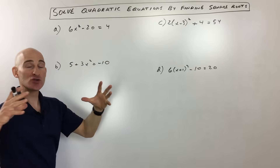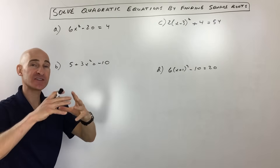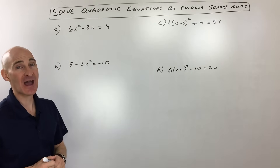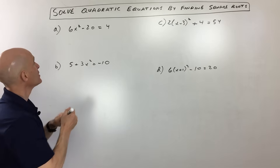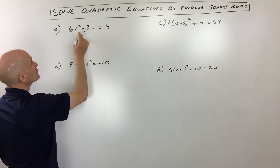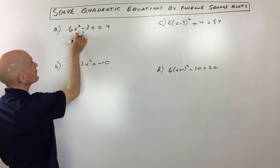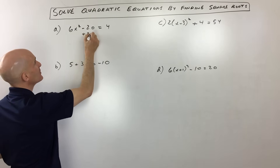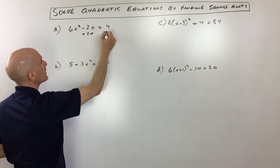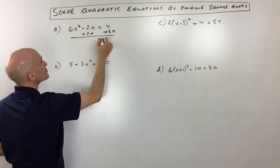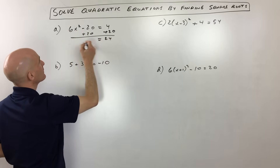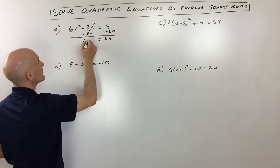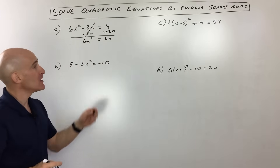We want to get this x by itself. So what we're going to do is work from the outside in by doing the opposite operation. What I would do first is add 20, working from the outside in towards x, doing the opposite — add 20. So if I do that, that gives us 24. These are going to cancel and we've got 6x squared left.